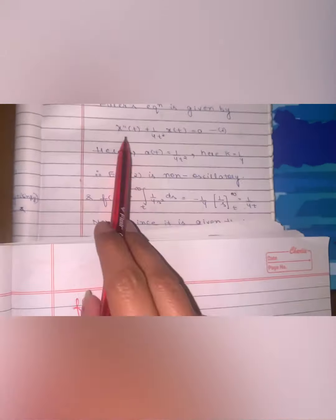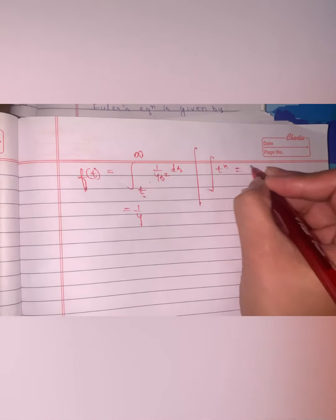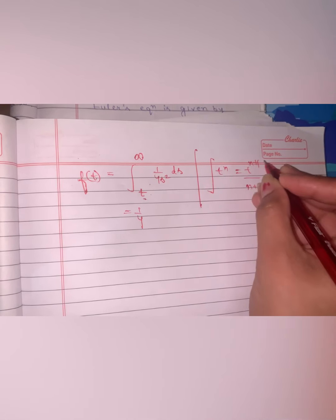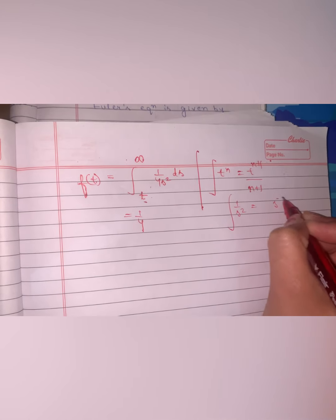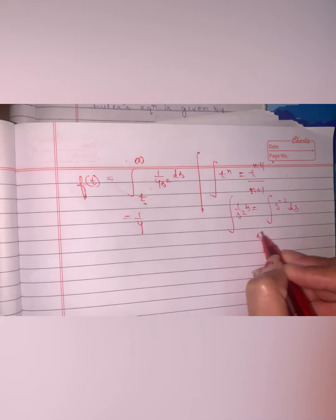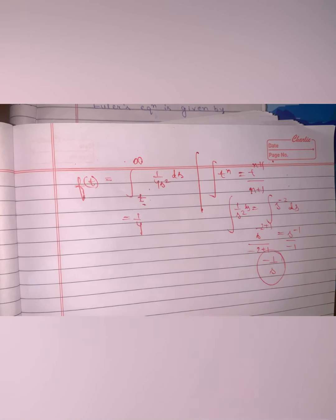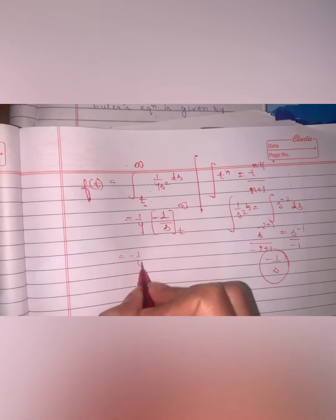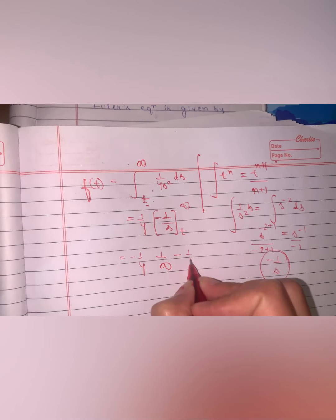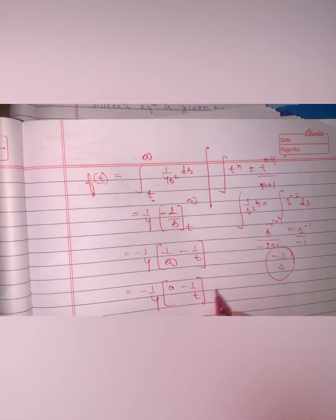Since 1/4 is constant, it comes out of the integral. The integration of 1/s² uses the power rule: t^(n+1)/(n+1). So integrating s^(-2) gives s^(-1)/(-1) = -1/s. Evaluating from t to infinity: (0) - (-1/t) = 1/t. Therefore f(t) = (1/4)·(1/t) = 1/(4t).